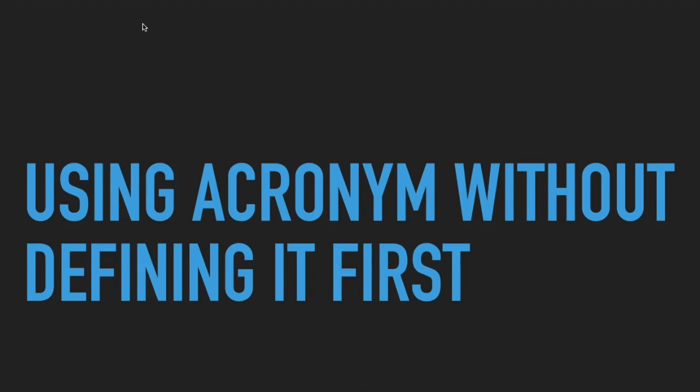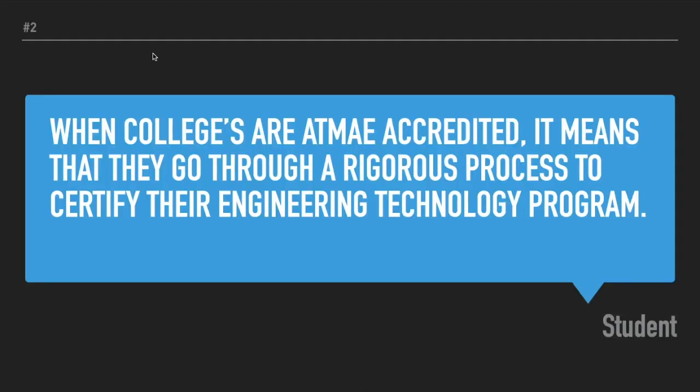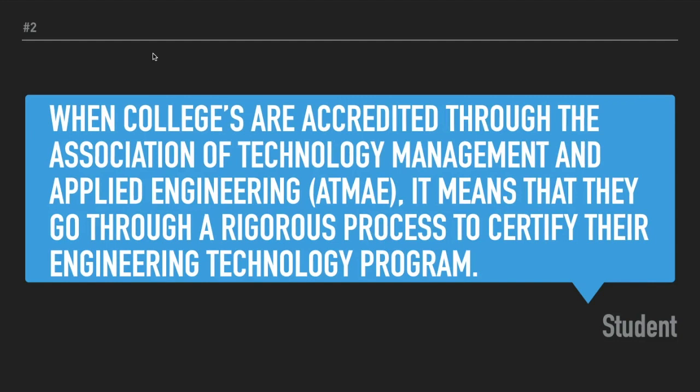Number two: using an acronym without defining it first. I see this so many times. For example: 'When colleges are ATMAE accredited it means that they go through a rigorous process to certify their engineering technology program.' What are the chances the reader knows what ATMAE is? You always have to define the acronym before you use it — but you only have to define it once, at the very beginning. Here's what you should do: 'When colleges are accredited through the Association of Technology Management and Applied Engineering (ATMAE), it means...' Now the student can use the acronym ATMAE throughout the rest of the paper.